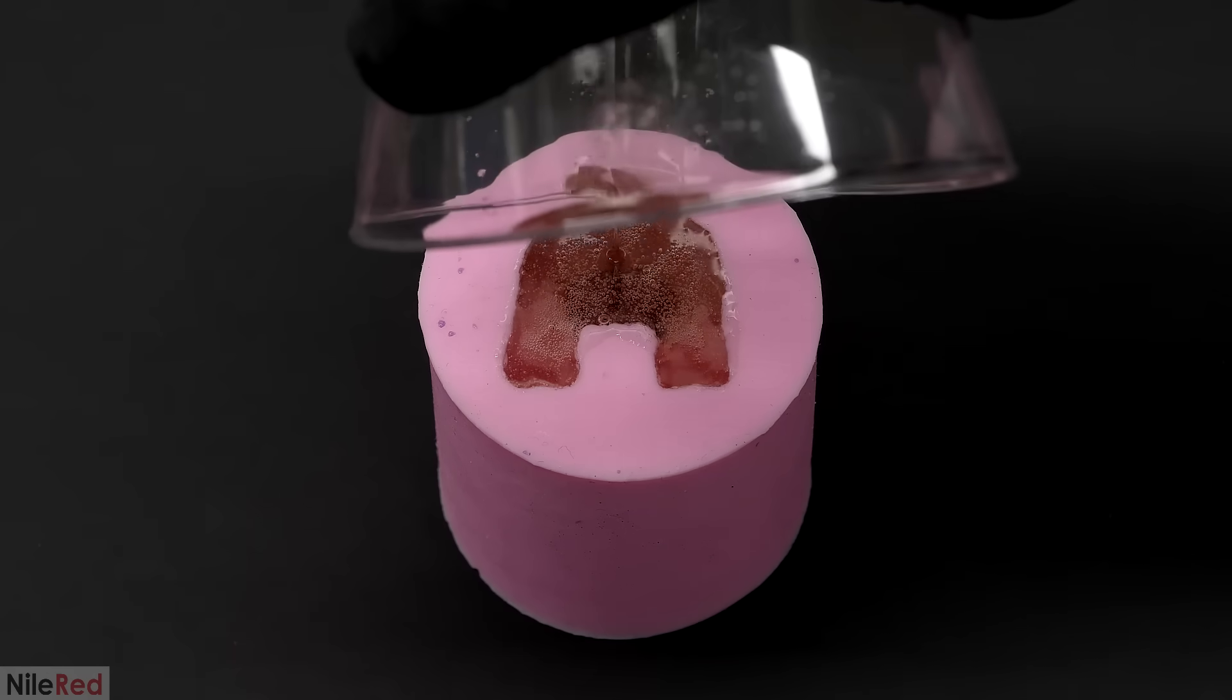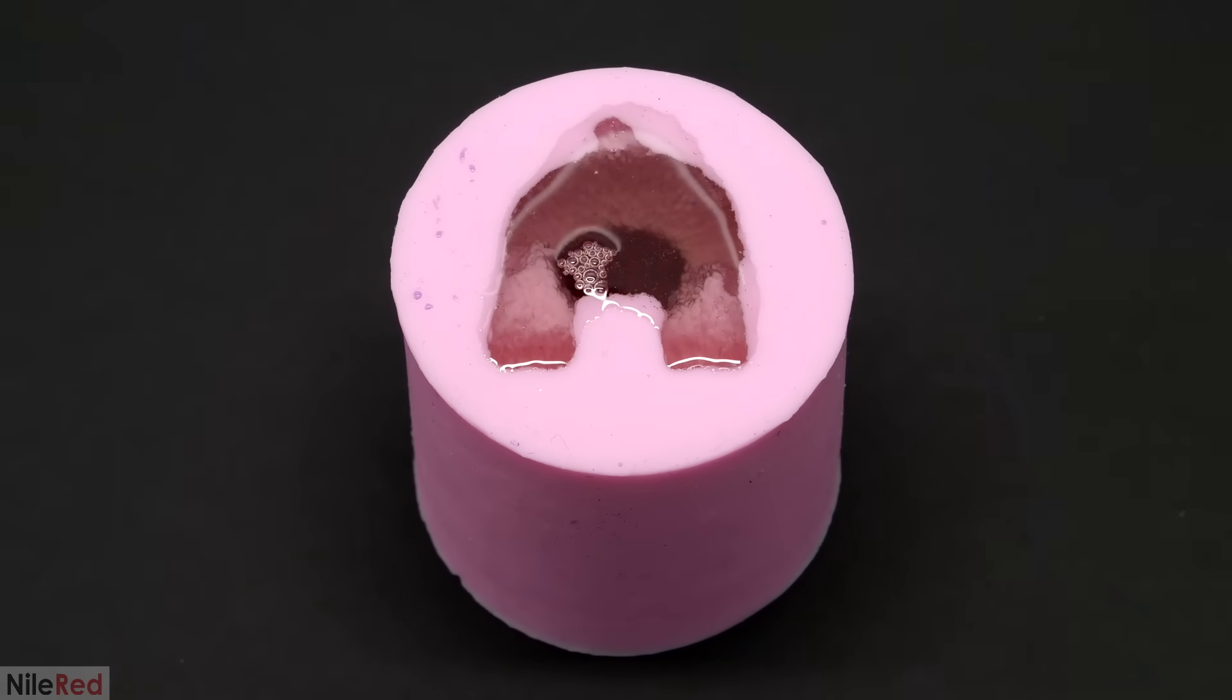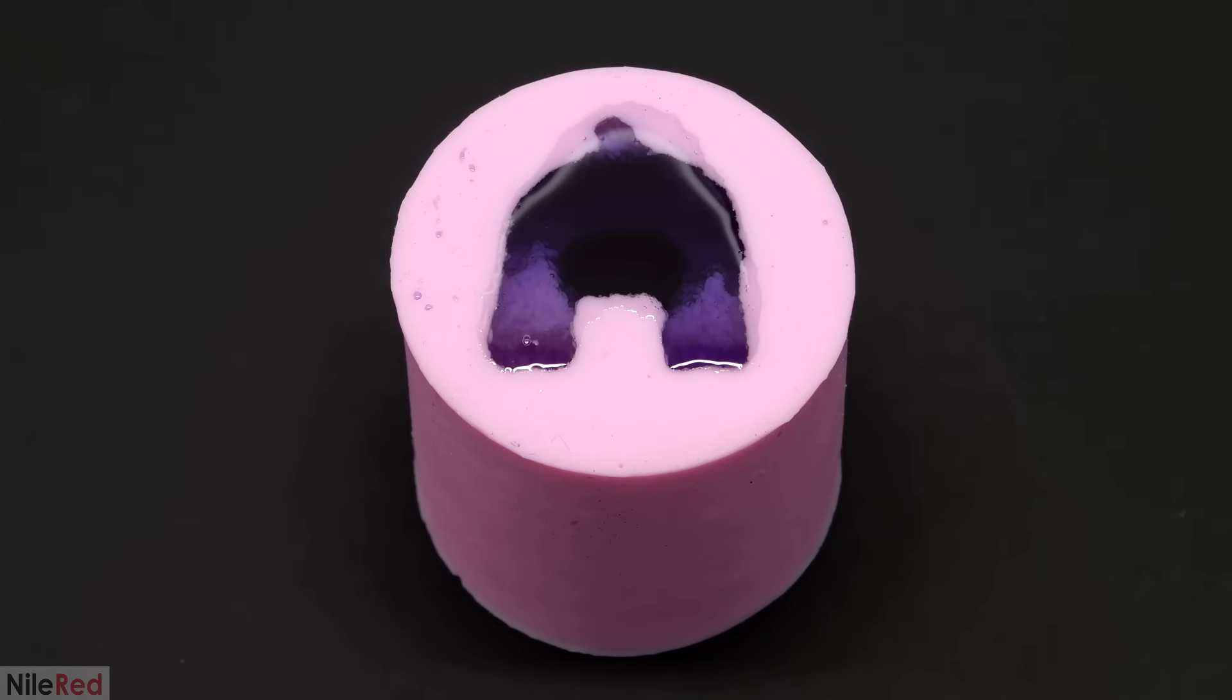I then added all of it to a teddy bear mold that I got from Amazon. What was weird though, was that as it cured, it slowly changed colors. I'm not sure why, but for some reason in this epoxy, the DNBP seems to be more stable in its blue form. I thought that maybe it would eventually change back, but it never did.